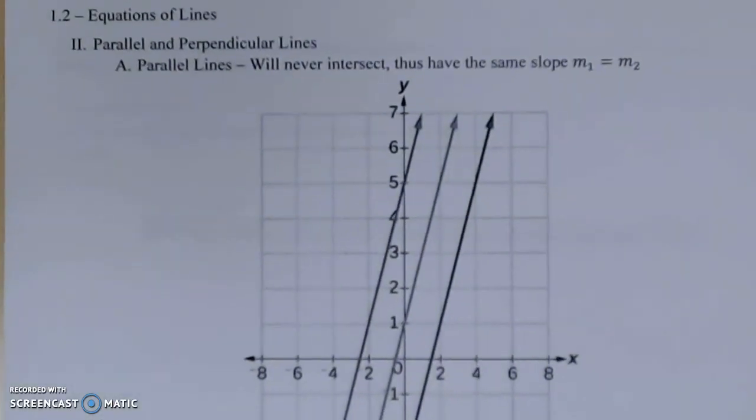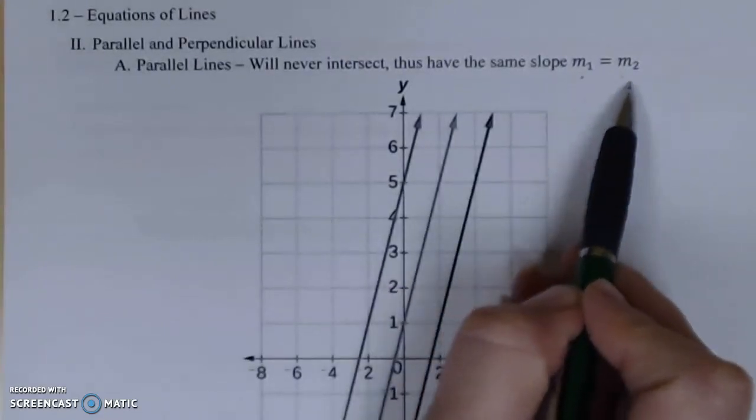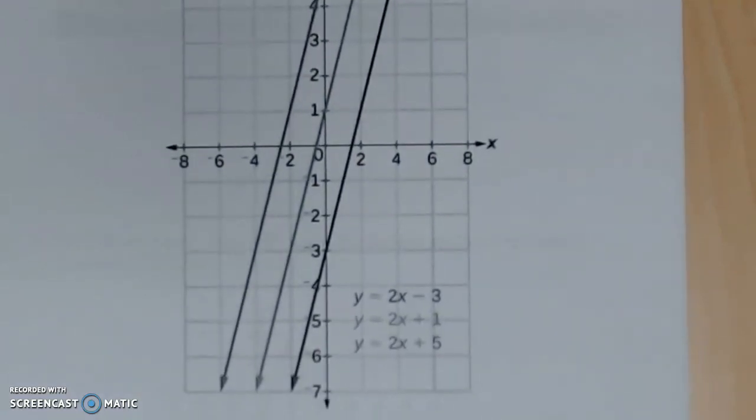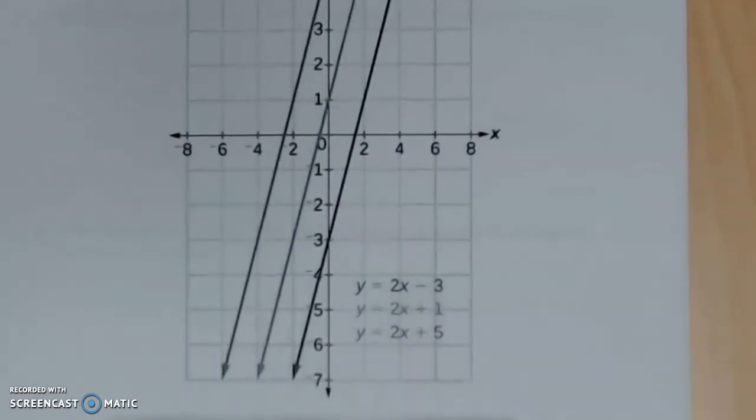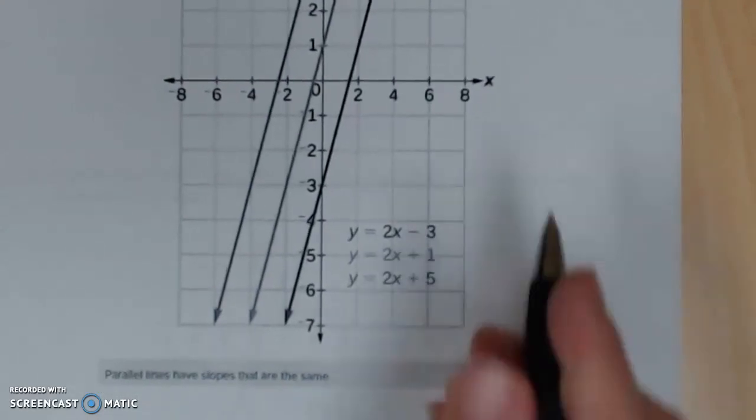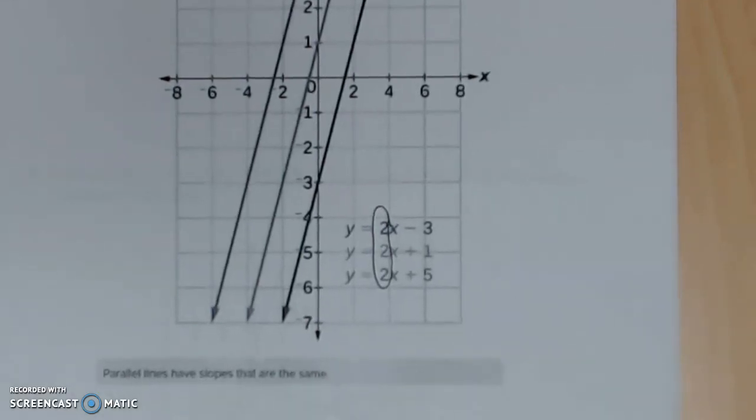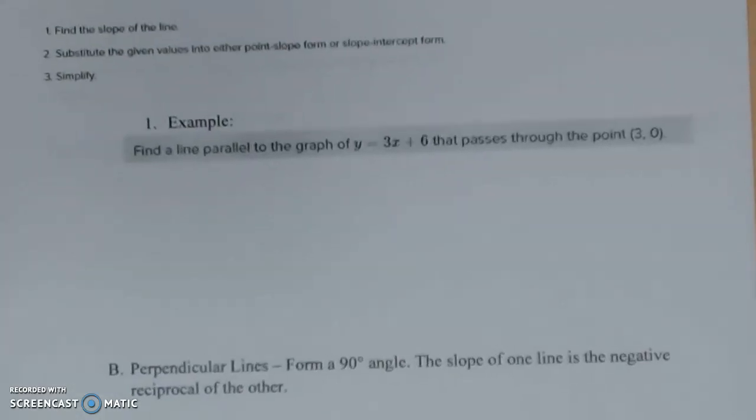The last concept is parallel and perpendicular lines. We'll start with parallel. Parallel lines will never intersect. Thus, they have the same slope, or M1 equals M2. Pictorially you can understand better: you can see these are never going to intersect no matter where I space them out or how far I draw them. Looking at these equations, two is what they have in common. That slope or incline is what's keeping them from intersecting. So with parallel lines, we say they have the same slope. I'm not concerned with if their y-intercepts are the same. I'm just looking at their slopes.